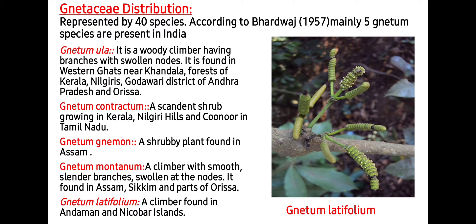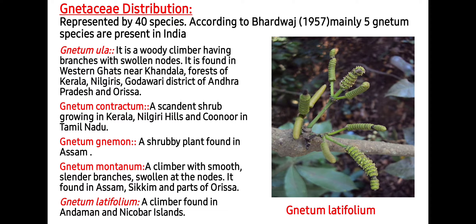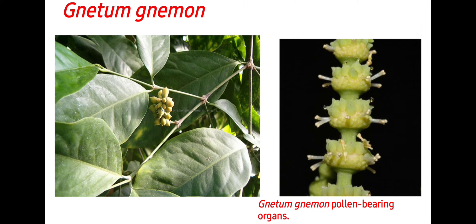Next is Gnetum montanum, a climber with smooth slender branches swollen at the nodes, found in Assam, Sikkim, and parts of Odisha. Next is Gnetum latifolium, a climber found in Andaman and Nicobar Islands. As seen in the images, reproductive organs are organized into inflorescence-like structures, and in Gnetum gnemon, male organs are present in ring-like structures that develop at the nodes.